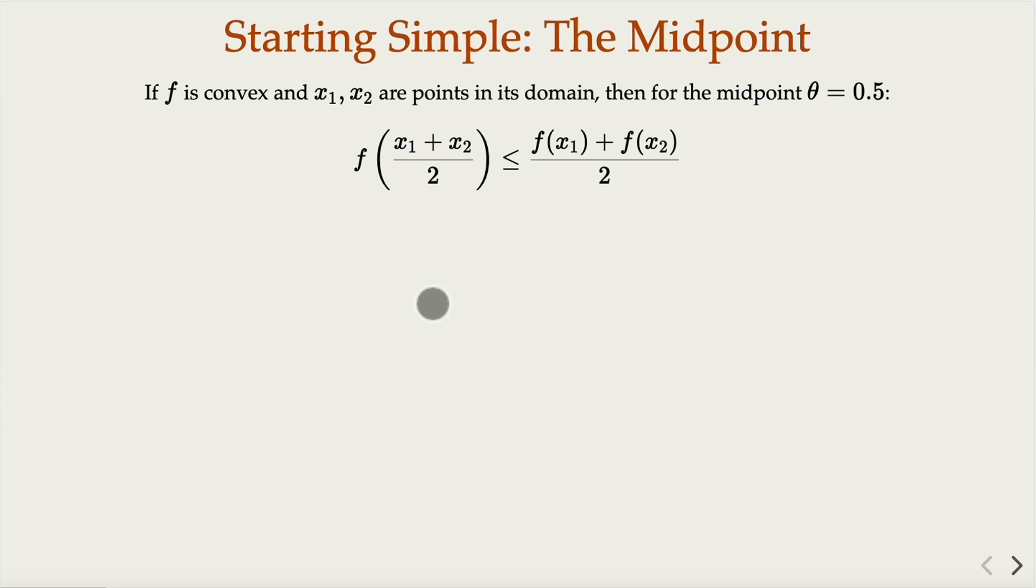Sometimes, people define the condition for a convex function to be what is called a midpoint convexity. So here, instead of choosing t or theta here, when you choose it to 0.5, that happens to be in the middle of x1, x2. And then, in that case, the equation becomes x1 plus x2 over 2. This is a midpoint. It will be less or equal to the average of the function value.